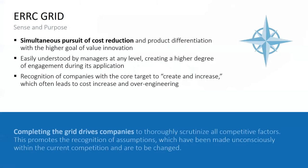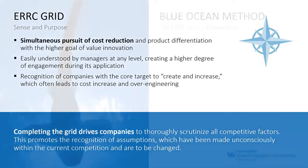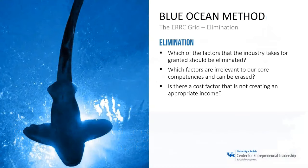How do we begin to create this? We're looking at factors of competition and putting them into an ERRC grid — which means listing the factors and then looking at what we're going to eliminate, what we're going to raise, what we're going to reduce, and what we're going to create that's brand new. That gives us a simultaneous pursuit of cost reduction, profit differentiation, and the higher goal of value innovation. The first area is elimination: what factors does the industry take for granted that we could just eliminate?